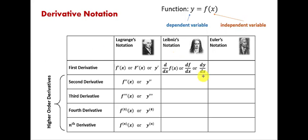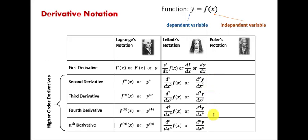Now let's talk about Leibniz's notation — the one that involves differentials. dy/dx is the first derivative. Note that on the top we always put the differential of the dependent variable, and on the bottom the differential of the independent variable x. For the second, third, fourth, and nth derivative we denote them in a similar way. The order of the derivative is represented by a number put both on the top and on the bottom. Notice that on the top it is placed next to d, and on the bottom it is placed next to the independent variable. Try not to confuse that with a power — these are not powers. The numbers represent the order of the derivative.